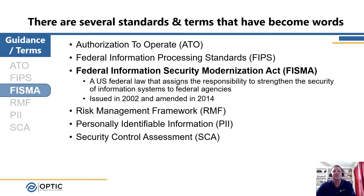Next we have the Federal Information Security Modernization Act, or FISMA. FISMA is the law that establishes the requirement to do the RMF — it's what makes the federal government go through the process to understand the risks associated with information systems and authorize their use. When the act first came out in 2002, it was called the Federal Information Security Management Act. In 2014, when they amended FISMA, they changed the name to the Federal Information Security Modernization Act, so both are still used interchangeably today.